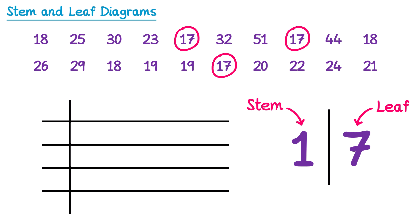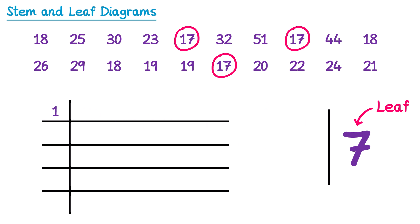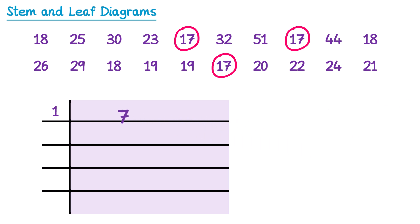We then put this number into the diagram. All of the stems go to the left of the vertical line, so we place the stem 1 at the top. We then place the leaves to the right hand side of the vertical line — the 7 goes in the same row as the 1 stem. There were three 17s, so we need to put two more 7s into this row. So whenever we have a 7 in the row with a stem of 1, it represents 17.